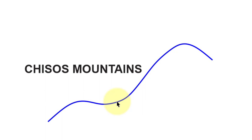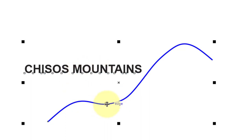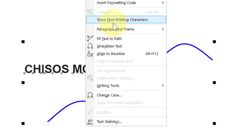We don't have to just do circles — we can actually make text fit to any kind of path. In this case we're going to fit it around a spline curve. I'm going to click on my text, hold down my Shift key, click on the spline curve, go up to the Text menu, and select Fit Text to Path.